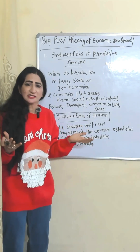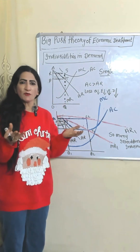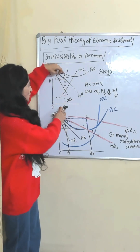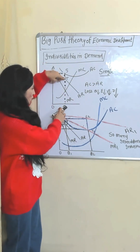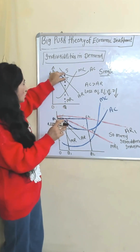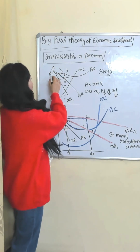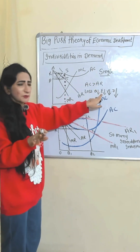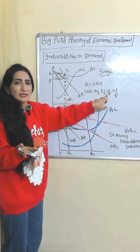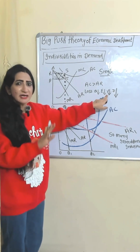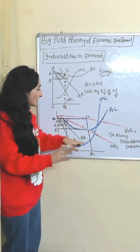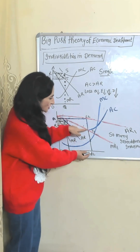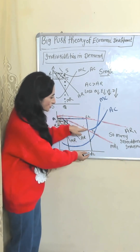Looking at the diagram of indivisibilities in demand: for a single industry, the average cost is higher than the average revenue. This gap is called per unit loss, and the whole area PRST is called the total loss of a single industry. Due to this loss, there is no output, no employment, no income — and if there is no income, how can demand be created? So a single industry cannot create any demand in the economy.